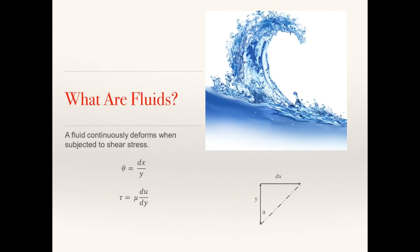Whilst we commonly use the term fluid to refer to liquids, a fluid is actually any substance which deforms continuously when subjected to shear stress. This essentially means that fluids are incapable of resisting shear forces applied to them. The nature of this deformation can be represented as theta equals dx over y. From the diagram on the right, you can see that theta is the deformation, dx is the movement of the fluid in a particular direction, and y is the perpendicular distance over which this deformation occurs.